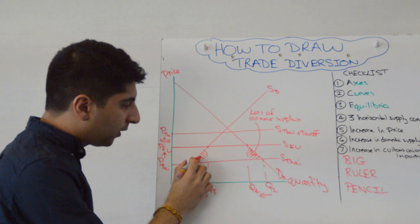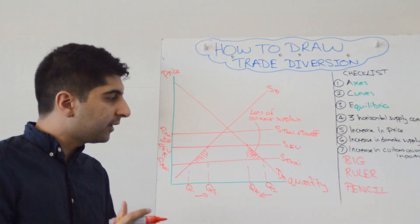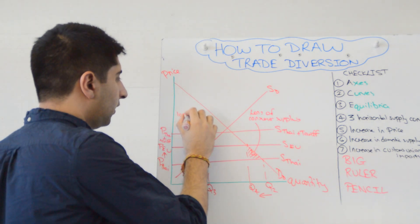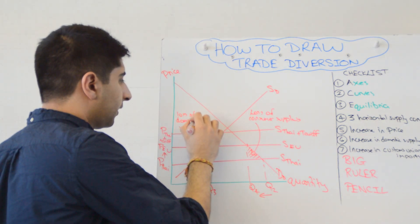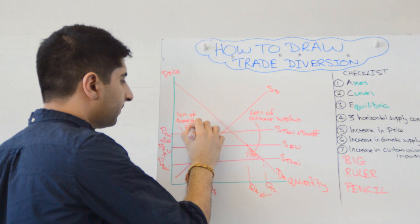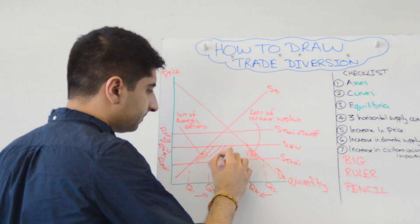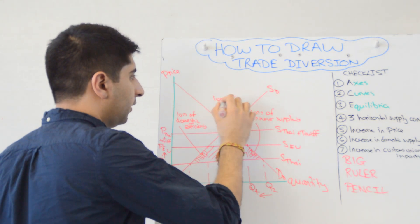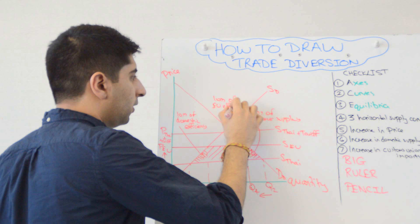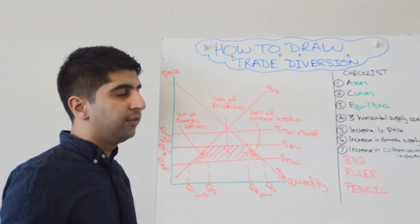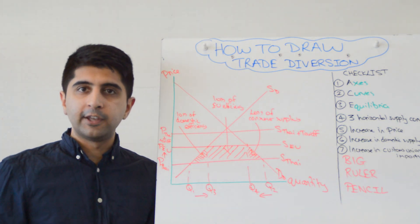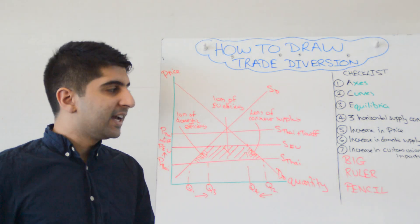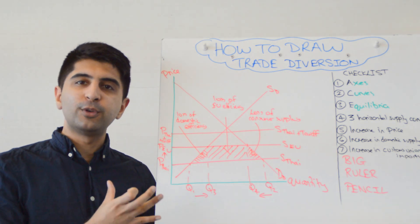We want to shade in now one massive area of inefficiency, but I'm going to break this down into two. Or we can label this as a loss of domestic efficiency. And we can shade this as a loss of EU efficiency. And if you want to understand why that is, then watch my theory video where I explain exactly why that is true. That, guys, is now complete. You can see how detailed this diagram is, and you need to make sure you can draw it.